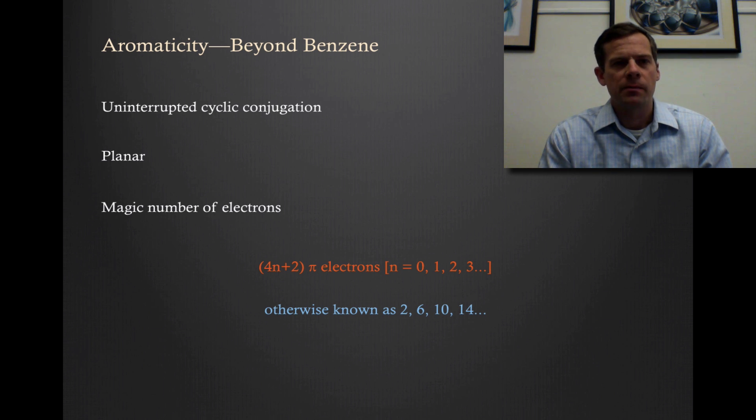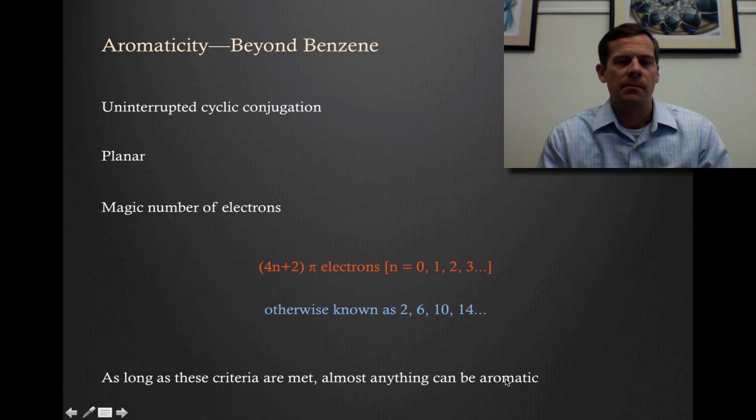Now we've learned about the requirements for aromaticity, which includes uninterrupted cyclic conjugation and as part of that, planarity, and then this magic number of electrons. And it turns out that as long as you satisfy these criteria, almost anything can be aromatic.